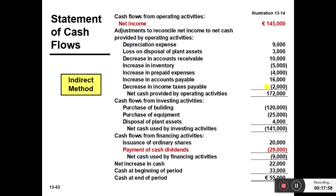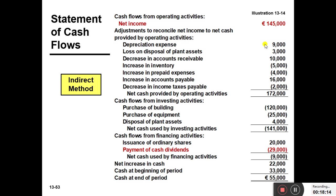Your cash flow statement is now complete using the indirect method. Do a thorough final review. The operating activities section starts from net income, with non-cash items added or deducted, losses adjusted, and current liabilities handled using the rule of thumb. In investing activities we used the additional information and balance sheet, taking all items into account including dividends and ordinary shares. Then we did the reconciliation — three main sections of cash flow, followed by the reconciliation section where you add the beginning balance and arrive at the ending balance as your final answer.